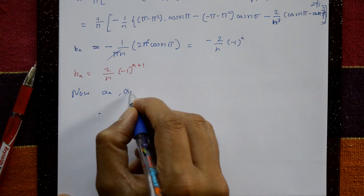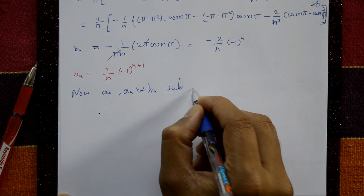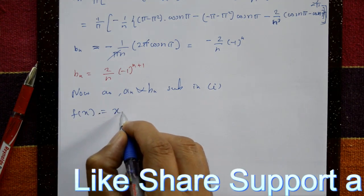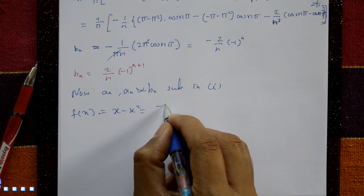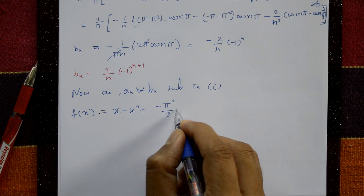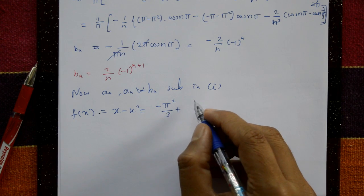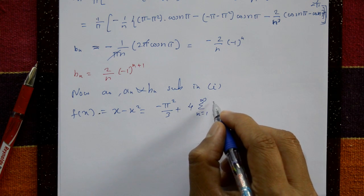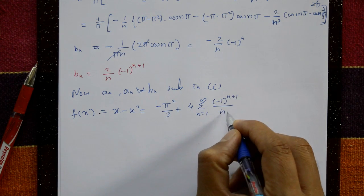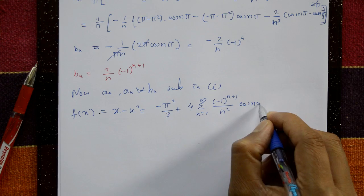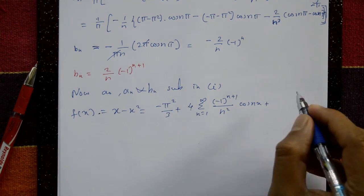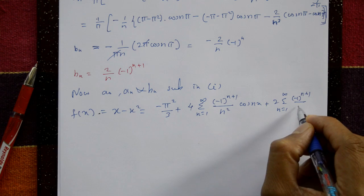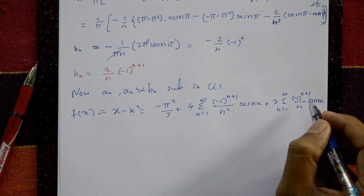Now substitute a₀, aₙ, and bₙ into equation 1: f(x) = x - x² = -π²/3 + 4·Σ(n=1 to ∞) [(-1)^(n+1)/n²]·cos(nx) + 2·Σ(n=1 to ∞) [(-1)^(n+1)/n]·sin(nx). This is the required Fourier series.